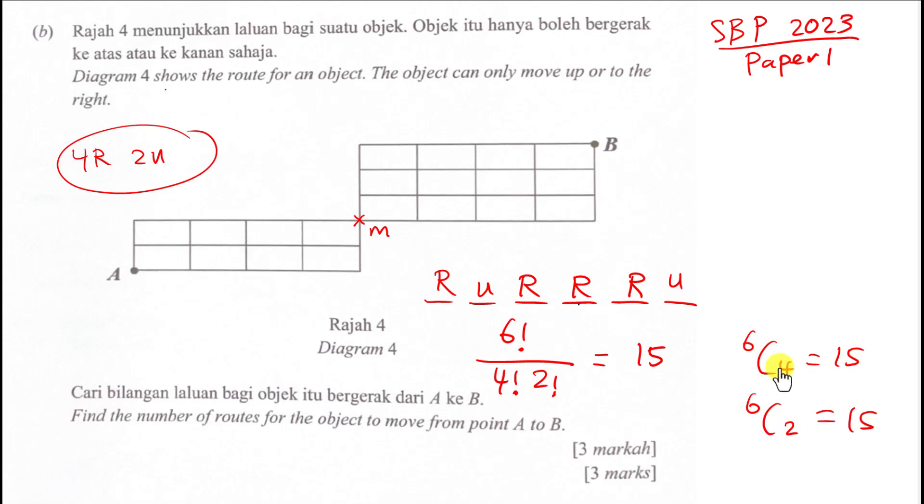Because the idea is like this: if I choose four R, I simply put no matter where I put my R, the remaining place is conforming to U. So I just need to think about six choose four R or six choose two U. The rest of the place will be R.